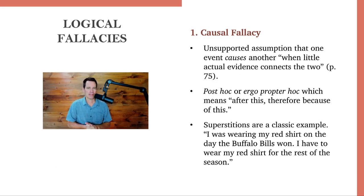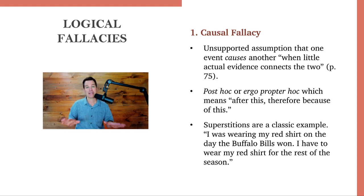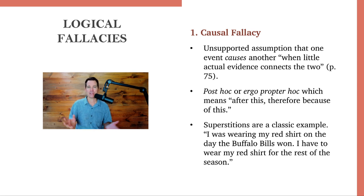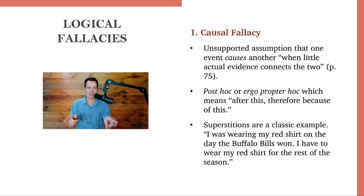Number one: the causal fallacy — not the casual fallacy. This isn't about being informal; it's about cause and effect. This is an unsupported assumption that one event causes another when little evidence connects the two things. Sometimes this is called post hoc ergo propter hoc, which means 'after this, therefore because of this.' Sometimes in life, something happens — A — and then if something happens right after it — B — we think cause-effect, that thing led to the other thing, when really the two things may just be coincidentally happening around the same time.